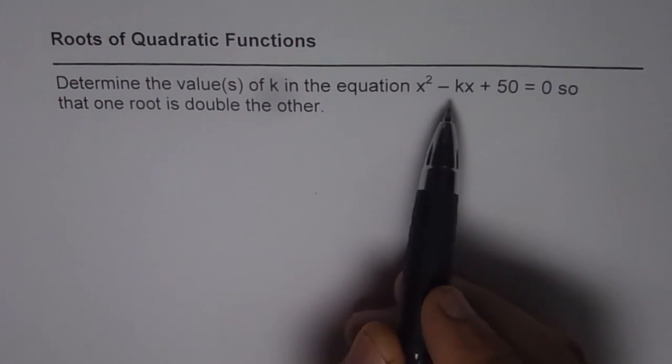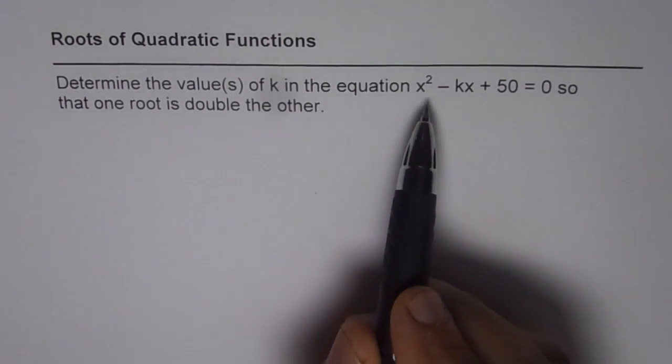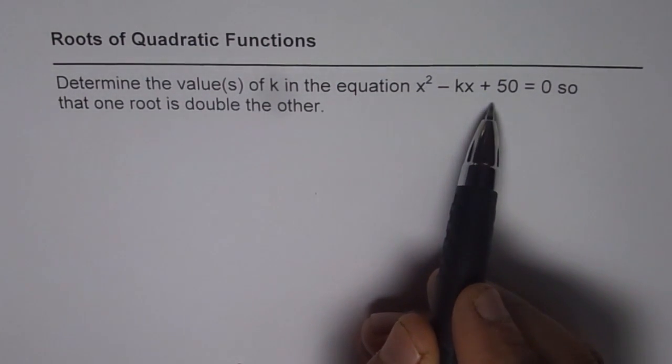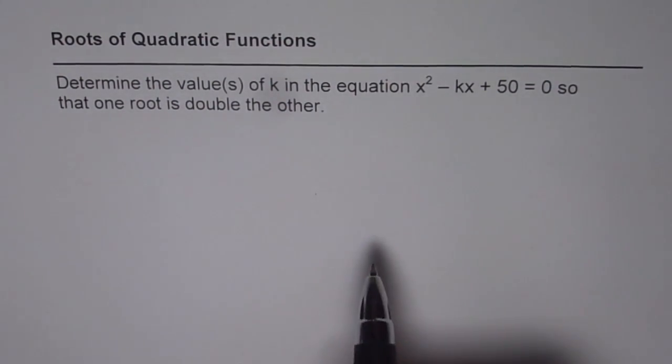We need to find the value of k so that this quadratic equation has two roots, one of them is twice the other.